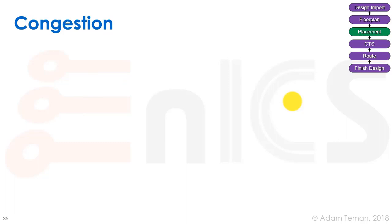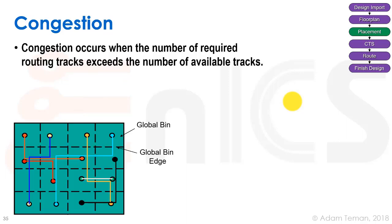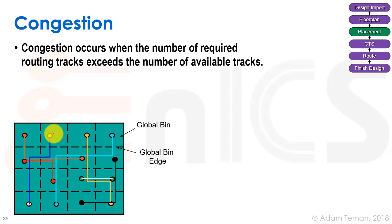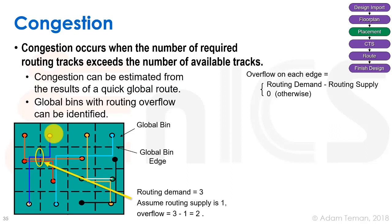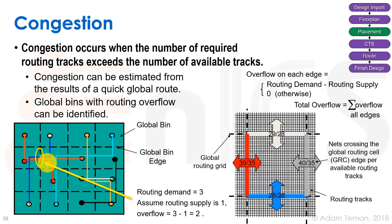The second target is congestion. Congestion occurs when the number of required routing tracks exceeds the number of available tracks. If we have global bins — areas with many standard cells — and we look at the edges of the bins, we can see routing demand versus supply. For example, if three routes want to cross an edge but only one track is available, we have an overflow of three minus one equals two, making that a high congestion area.